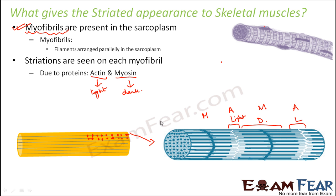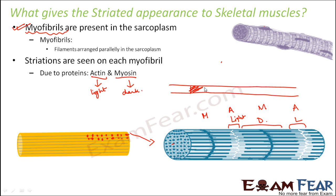How are actin and myosin organized on each myofibril? In the myofibril, you have a dark band, then a light band, alternating. The dark region contains myosin and the light region contains actin, arranged one after another. All these proteins are arranged parallel to the longitudinal axis of the muscle fiber.